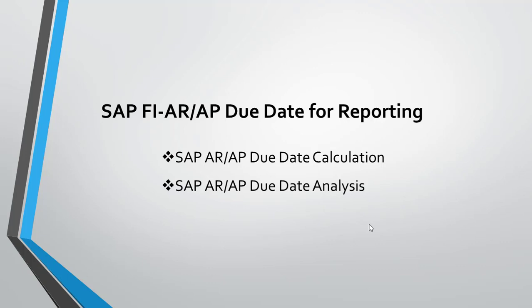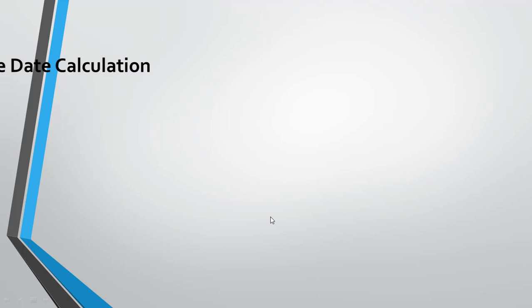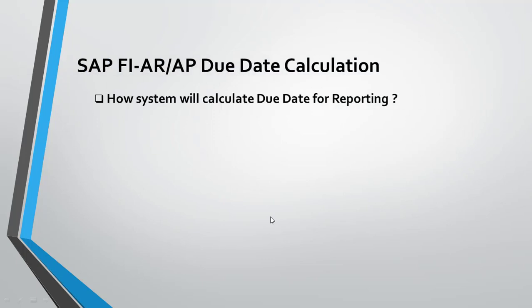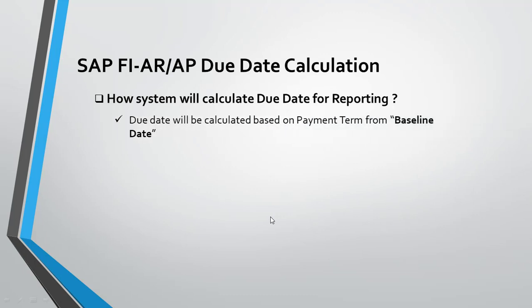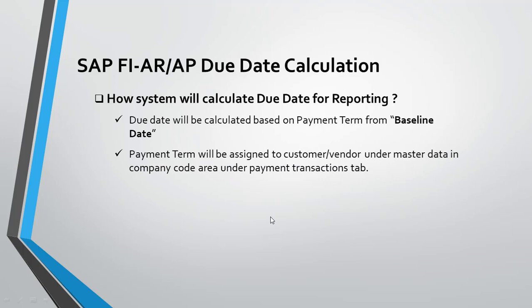First I would like to give you an overview on how the due date calculation is done in the system for AR and AP. The due date is calculated based on the payment time from the baseline date. The payment time can be 30 days, 40 days, or different payment times. I will explain the baseline date in the next section. The payment time will be assigned to the customer and vendor master data in the company code area under the payment transaction tab.